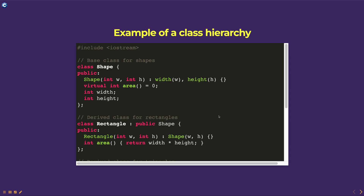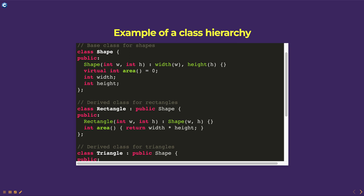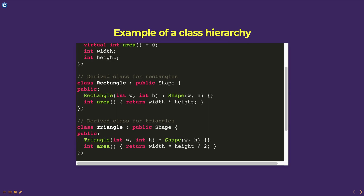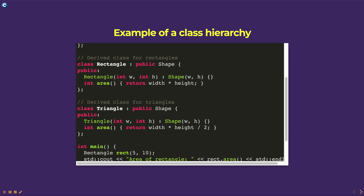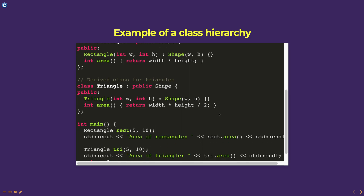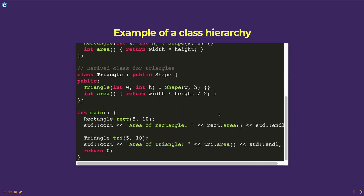In this example, the shape class is the base class for a class hierarchy that represents different types of shapes. The rectangle and triangle classes are derived from the shape class and they inherit and extend the features of the shape class by defining their own area method. The area method in each derived class calculates the area of the corresponding shape using the width and height members of the shape class.